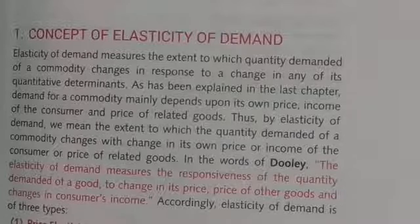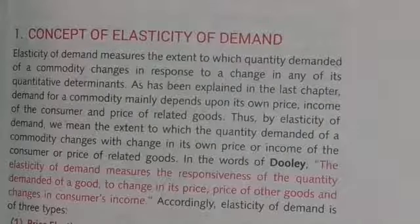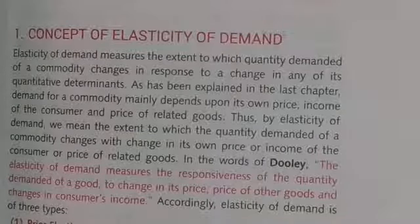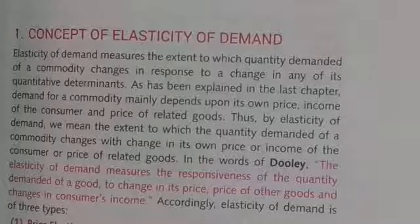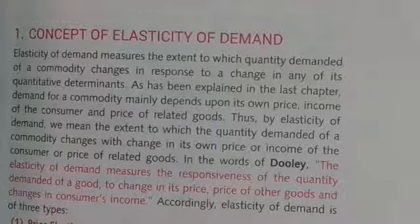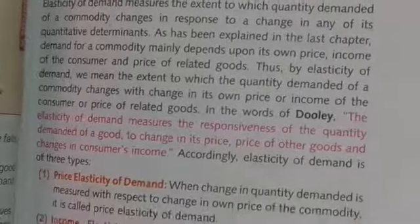As explained in the last chapter, demand for a commodity mainly depends upon the own-price, income of the consumer, price of related goods, and taste and preference. The three main items which change demand are own-price, income of the consumer, and price of related goods.